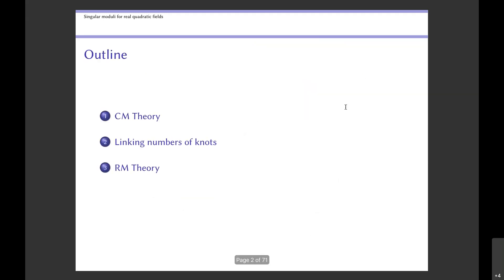I want to first dwell a little bit on CM theory, the theory of complex multiplication, before I move on to RM theory — maybe 'theory' should be in quotation marks, which will become clear later in this talk. In the middle I'll talk about something that seems bizarrely out of place: linking numbers of knots, which seems a priori to have nothing to do with CM theory, but it provides an important motivation and some of the mechanical constructions that go into our RM theory.